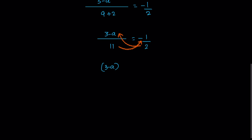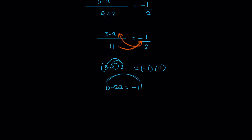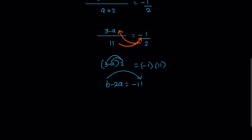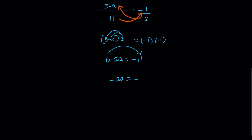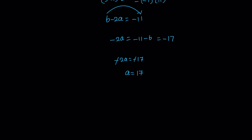Cross multiplying: 3 minus A times 2 equals minus 1 times 11. Multiplying individual terms: 6 minus 2A equals minus 11. Then minus 2A equals minus 11 minus 6, which is minus 17. The minus signs cancel, so A equals 17 divided by 2.